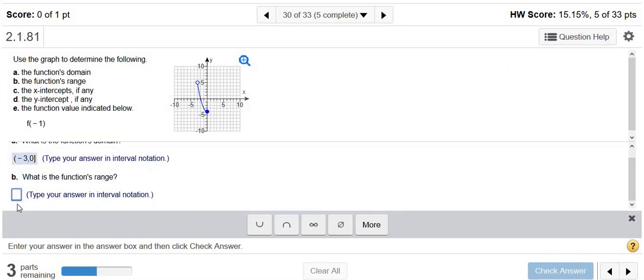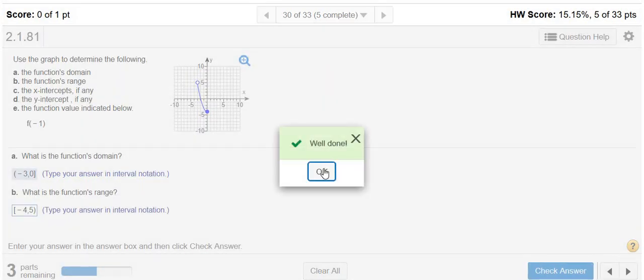So it's a bracket at negative 4, and it's a parentheses at 5 because there's a hole there. So here we go. Good stuff.